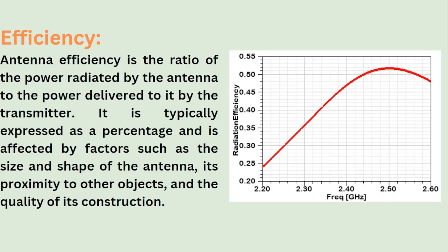Next, we have the efficiency. Antenna efficiency is the ratio of the power radiated by the antenna to the power delivered to it by the transmitter. It is typically expressed as a percentage and is affected by factors such as the size and shape of the antenna, its proximity to other objects, and the quality of its construction. So, the more the efficiency of the antenna, it is better for applications, and if it is less efficient, it may demand more power to be used.